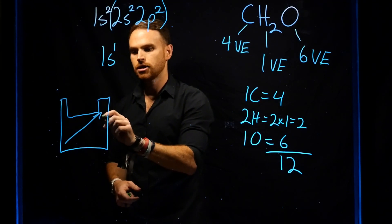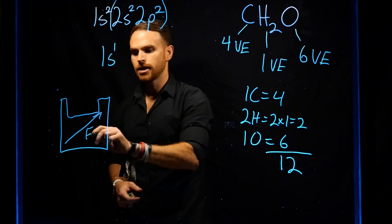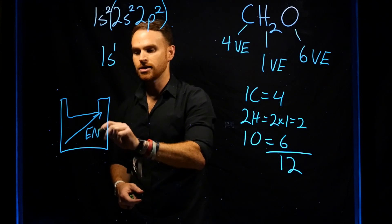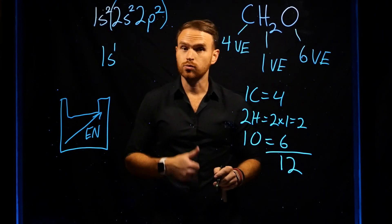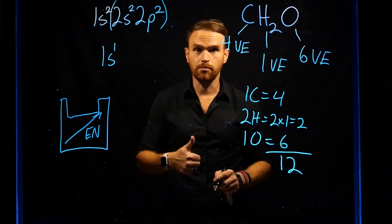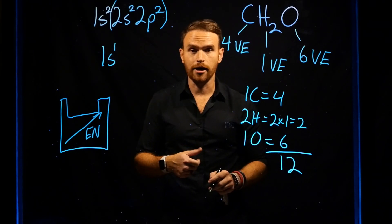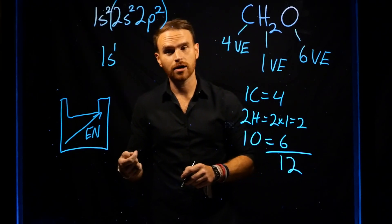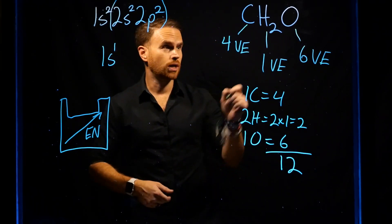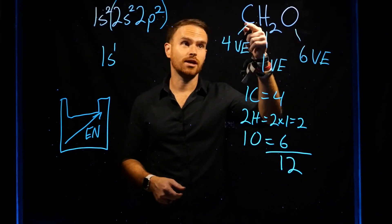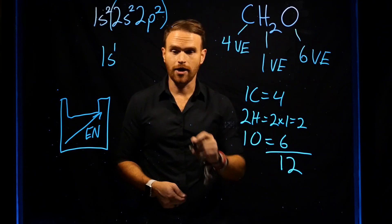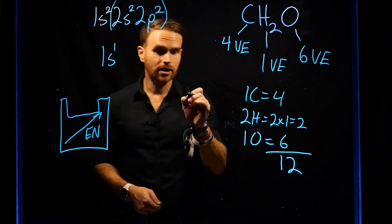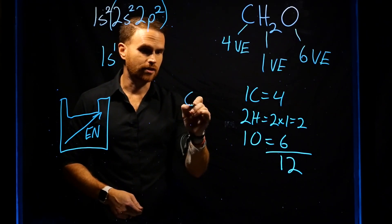If you remember the periodic trends for electronegativity, you increase electronegativity as you go up and to the right on the periodic table. This is why fluorine is the most electronegative atom, followed by oxygen. So that means carbon is our least electronegative atom and we can place it in the center.